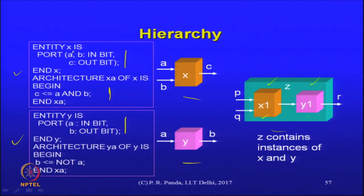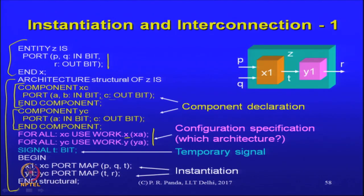Through that configuration specification, we are saying that when there is an instantiation corresponding to that XC component, you use the entity X. Remember, an entity could possibly have multiple architectures. The reason for having an architecture with a given name is that you could have multiple architectures, and out of the several architectures you could have defined, XA is the one to be picked up — that is what the configuration specification is telling us. 'For all' is a keyword meaning that for all instantiations of component XC, you use this.